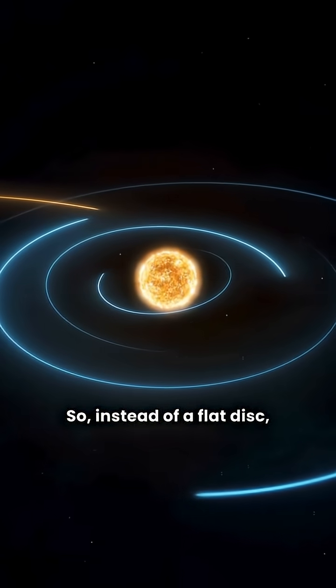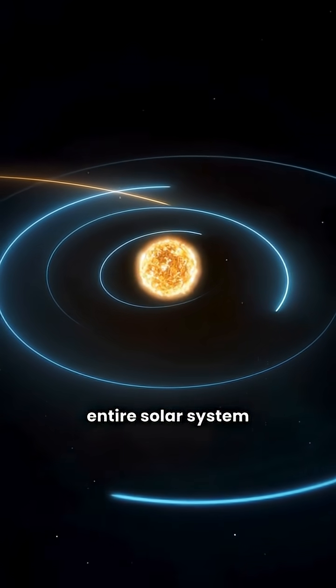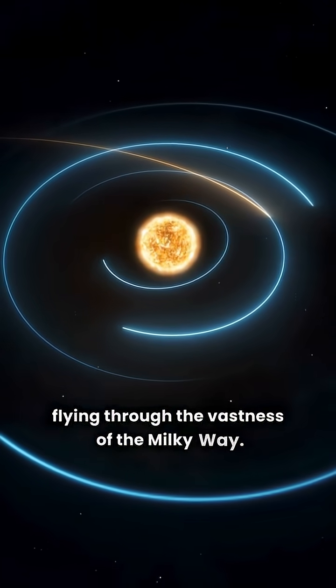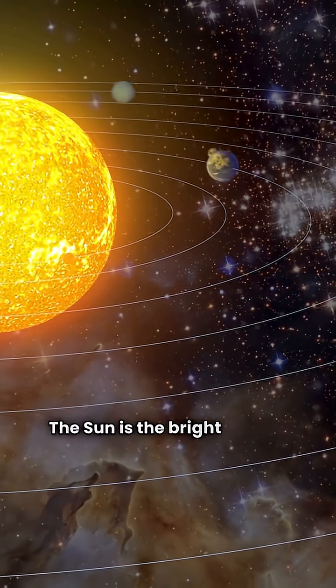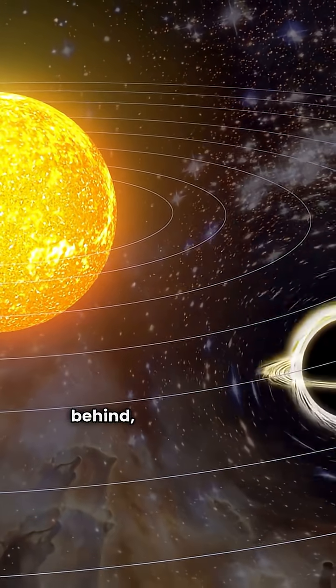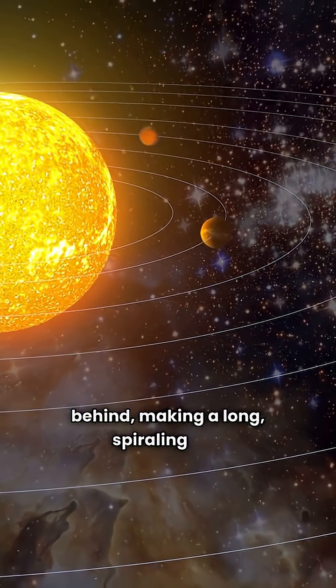So instead of a flat disk, picture our entire solar system as a giant glowing comet flying through the vastness of the Milky Way. The sun is the bright head of this comet, and the planets are trailing behind, making a long, spiraling tail.